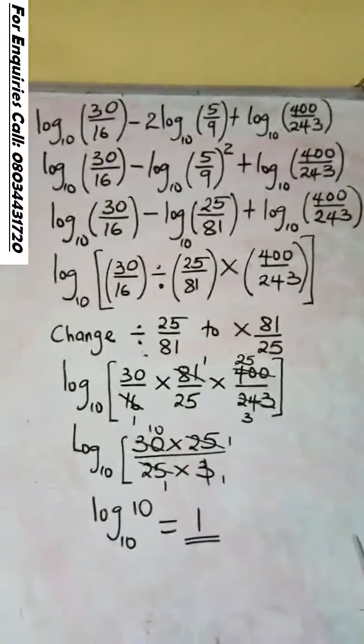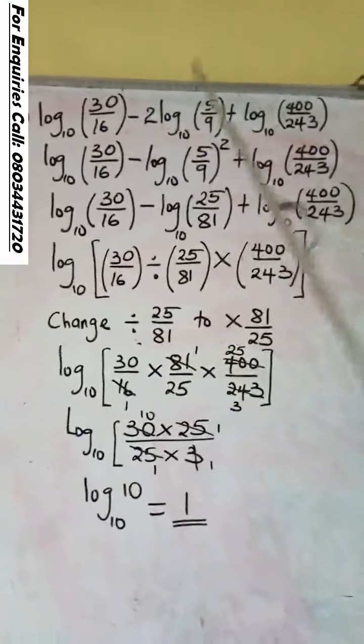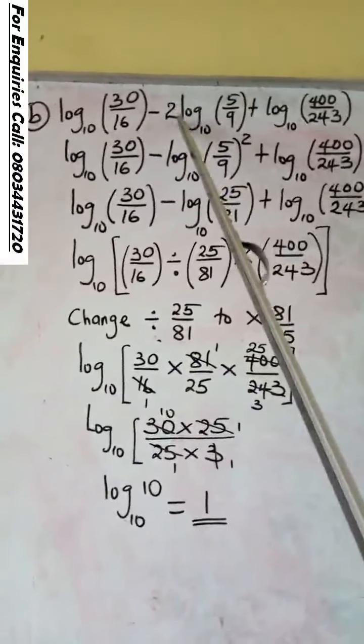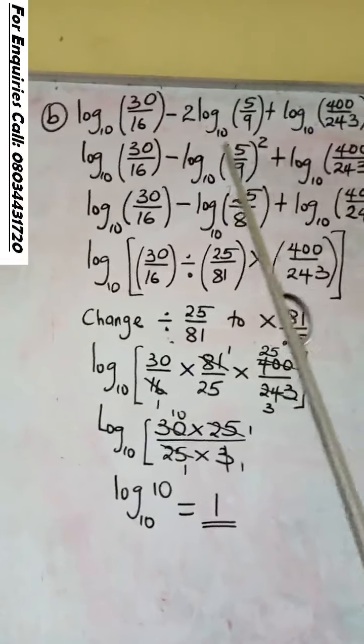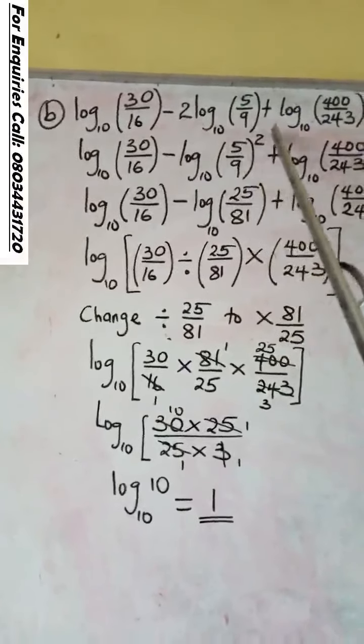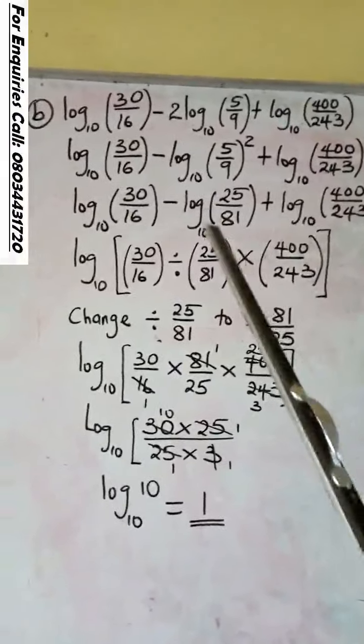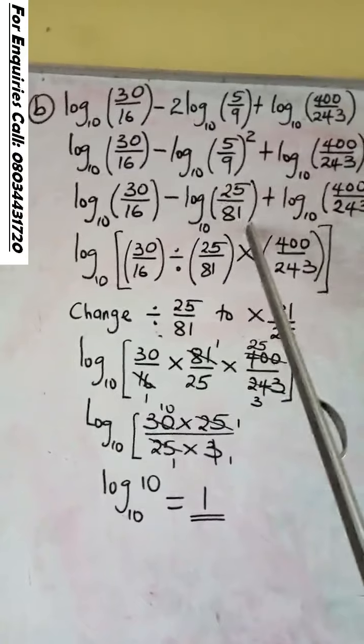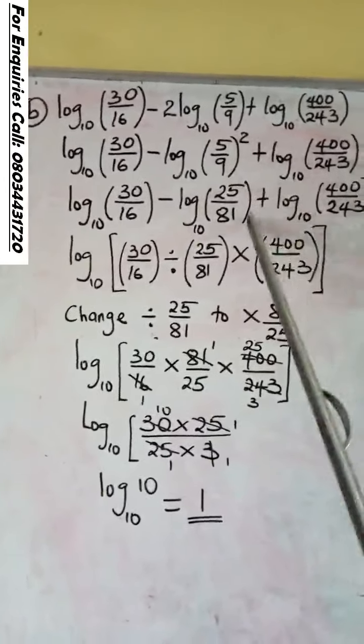For question 2, the same thing, but you need to follow the laws. What you do here first is remove the 2 at the front to power. So it will be 5 over 9 raised to power 2. You need to do step by step. The next step is to remove the power, which is 25 over 81. 5 raised to power 2 is 25. 9 raised to power 2 is 81.